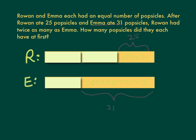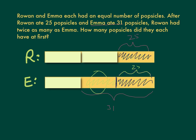Now I can start piecing together and solving. Emma ate at least as much as Rowan — Rowan ate 25, so Emma also ate at least 25. She actually ate more. The question is how much more. Looking at Emma's eaten popsicles: if her whole eaten bar is 31 and this section is 25, I can find the remaining part by doing 31 minus 25, which is 6.